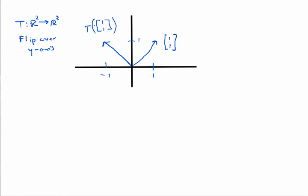But there are a few other vectors that don't really move much at all. Take a look at the vector (0, 1). It is already on the y-axis, so if I were to draw its transformation, it would look exactly like itself. If we're flipping over the y-axis, something that's on the y-axis isn't going to move anywhere. So this vector is actually equal to its own transformation — the transformation doesn't move it at all.